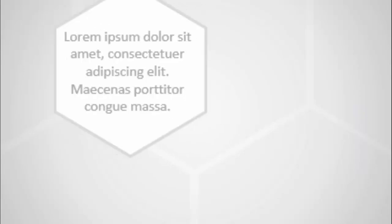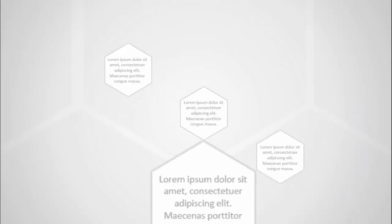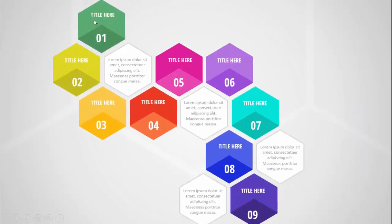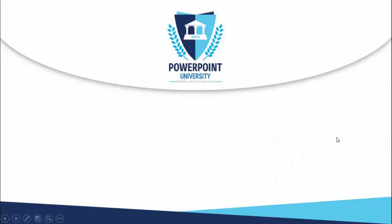In today's tutorial I'm going to show you how to create a nine-options infographic slide in PowerPoint. When I click it will show four options surrounded by different hexagon shapes with nine options. You can add the title, the option number, and some detailed text. You can also replace the option number with icons.